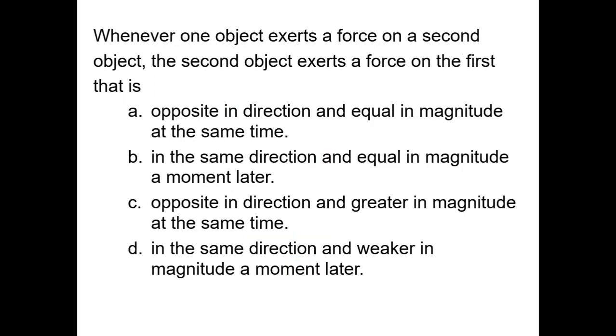Whenever one object exerts a force on a second object, the second object exerts a force on the first. That is: (a) opposite in direction and equal in magnitude at the same time, (b) in the same direction and equal in magnitude a moment later, (c) opposite in direction and greater in magnitude at the same time, or (d) in the same direction and weaker in magnitude a moment later? I'll let you read through those again.